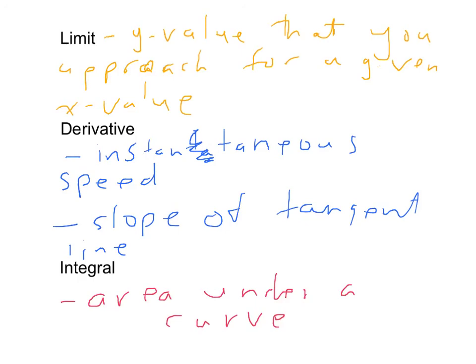I do want to point out, for the derivative, the instantaneous speed is what we call the physical meaning. And the slope of the tangent line is what is known as the geometric meaning. Okay, continue to add these notes to your Cornell notes.